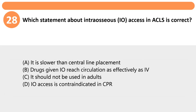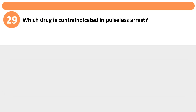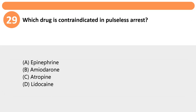Which statement about intraosseous (IO) access in ACLS is correct? A. It is slower than central line placement. B. Drugs given IO reach circulation as effectively as IV. C. It should not be used in adults. D. IO access is contraindicated in CPR. Answer: B. IO access provides equally effective drug delivery during CPR.